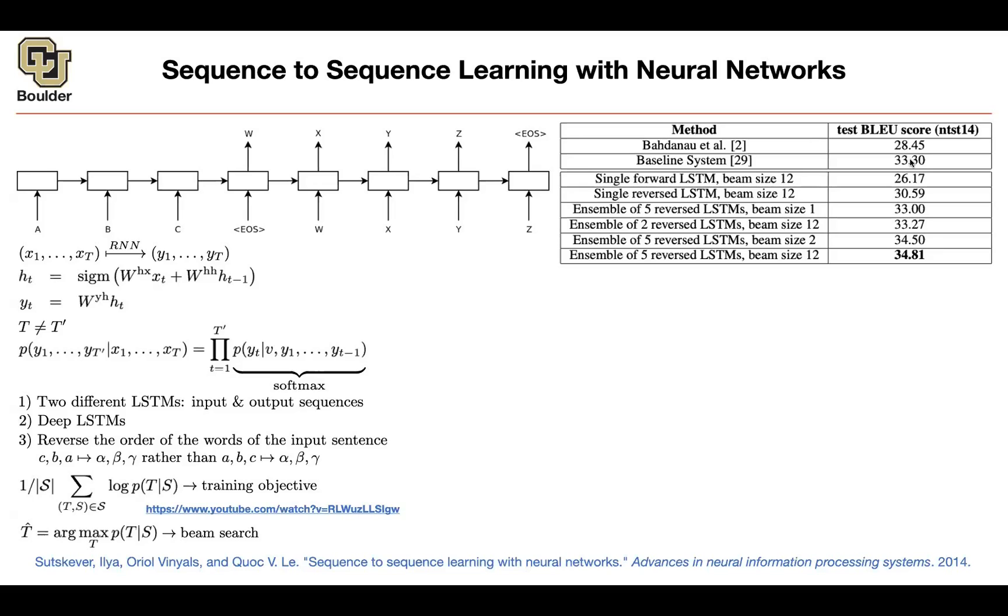But then the idea is you want to use neural networks to beat this baseline system. So if you are doing research in neural networks, you want to beat that baseline system. If you use a single forward LSTM with beam size of 12, so beam size is a hyperparameter that you need for your beam search. That's going to give you 26.17,